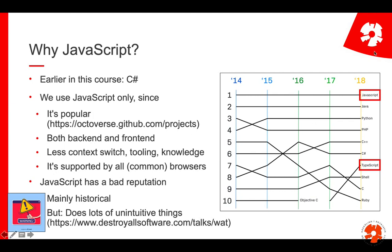Why do we use JavaScript in this course? We had C# before but decided to use JavaScript for both front-end and back-end for several reasons. First, it's highly popular. Looking at GitHub statistics over the last five years, JavaScript is the number one language by use — most repositories have JavaScript. TypeScript, which is compiled or transpiled into JavaScript, is also essentially JavaScript. It's more popular than Java, Python, PHP, and definitely more popular than C#.